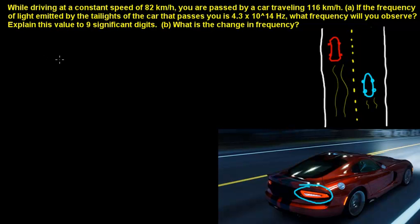Hi, we're talking about the Doppler Effect and we're just continuing where we left off. So in this problem, you're the blue car, you're driving at a constant speed of 82 km per hour.